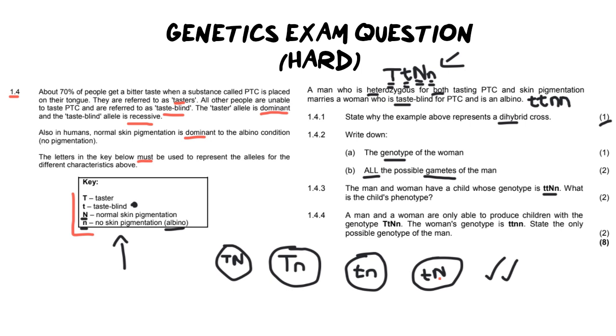And last but not least, a man and a woman are only able to produce children with the genotype of big T, little t, big N, little n. The woman's genotype is all homozygous recessive. State, and this is a big one, the only possible genotype of the man. Now I don't want you to fall into the trap of seeing this lady's genotype over here and going oh that's the same as the woman at the beginning of this question. So obviously the dad must be the same that they're talking about. It's not, it's a completely separate couple, it's not the same group of people.